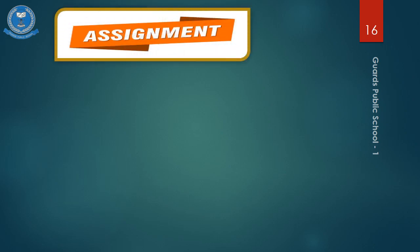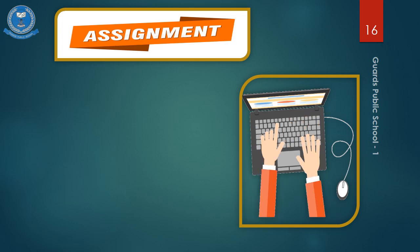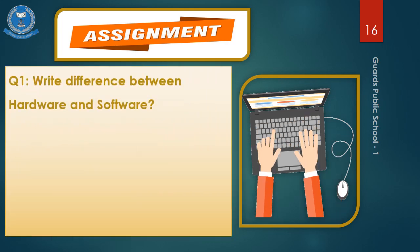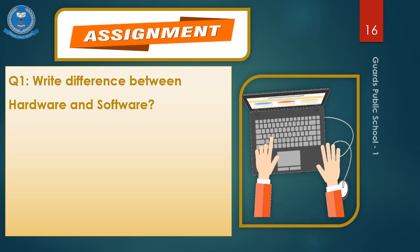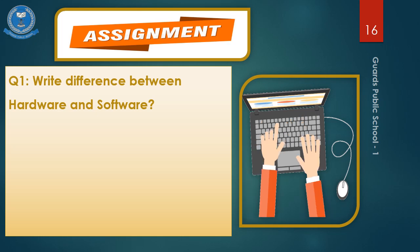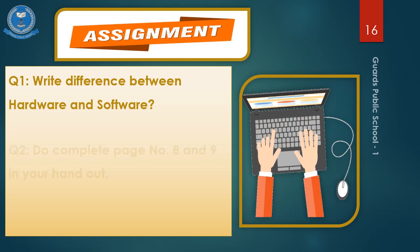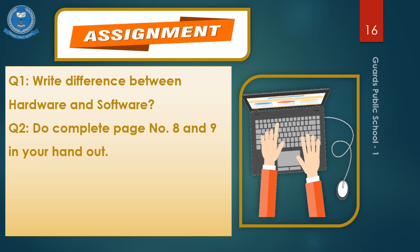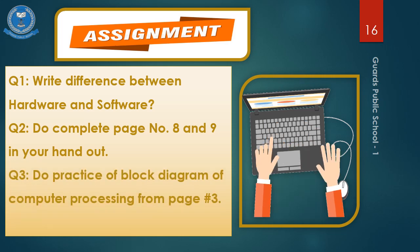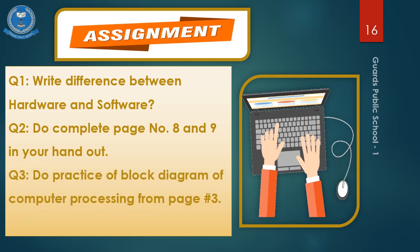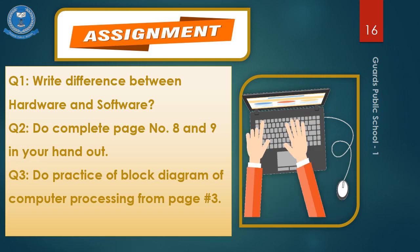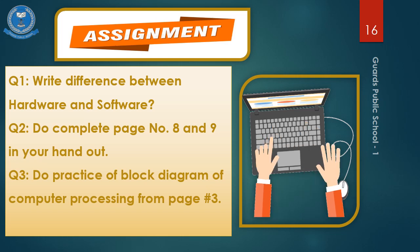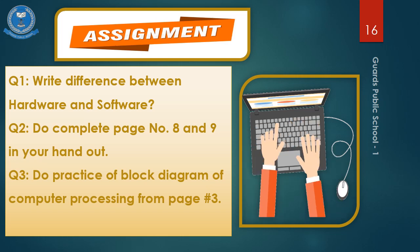Now it's assignment time. Question number one: write the difference between hardware and software in your own words — not the definition, just the difference. Question number two: complete page number eight and nine in your handout. Question number three: do practice of the block diagram of computer processing from page number three in your handout. Draw it in your sheets and practice the block diagram.